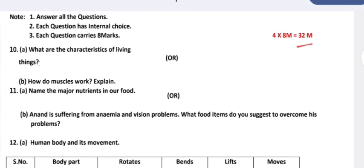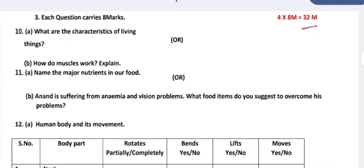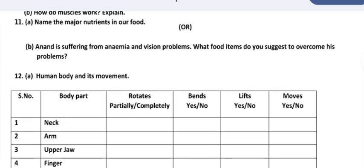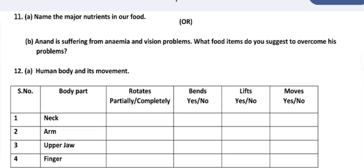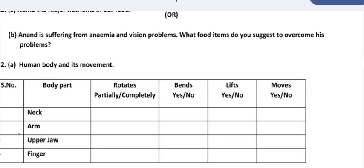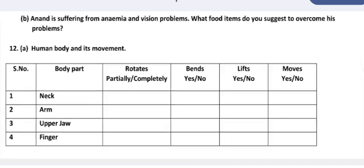What are the characteristics of living things? How do muscles work? Explain. Name the major nutrients in our food. Anand is suffering from anemia and vision problems. What food items do you suggest to overcome his problems?